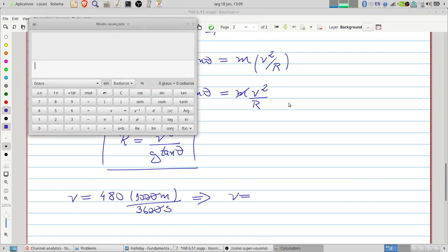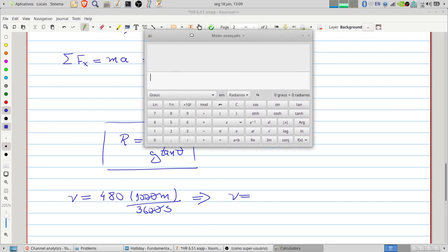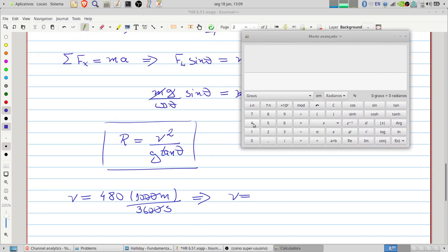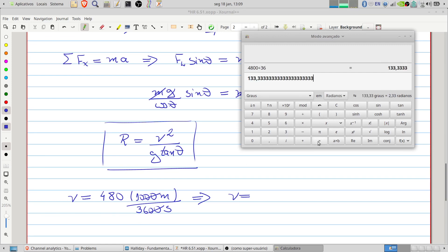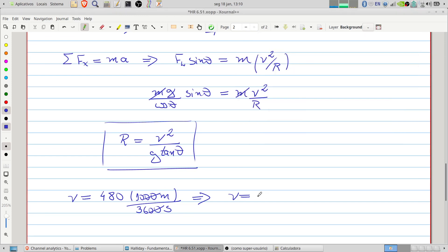Let's use our calculator here. We will have 408 times 10 divided by 36. That is 113 meters per second.